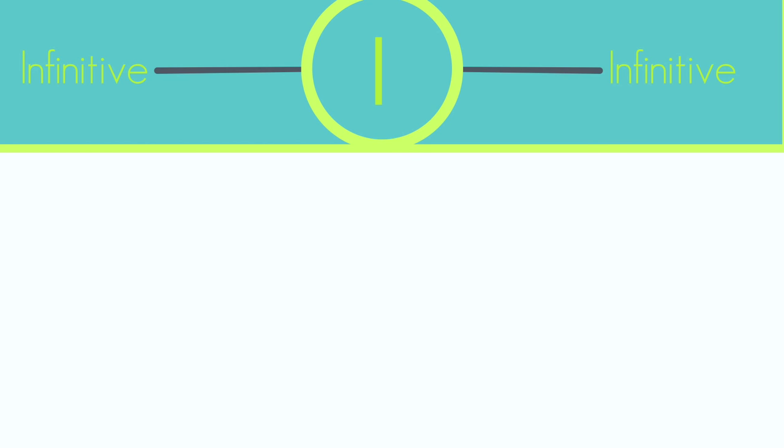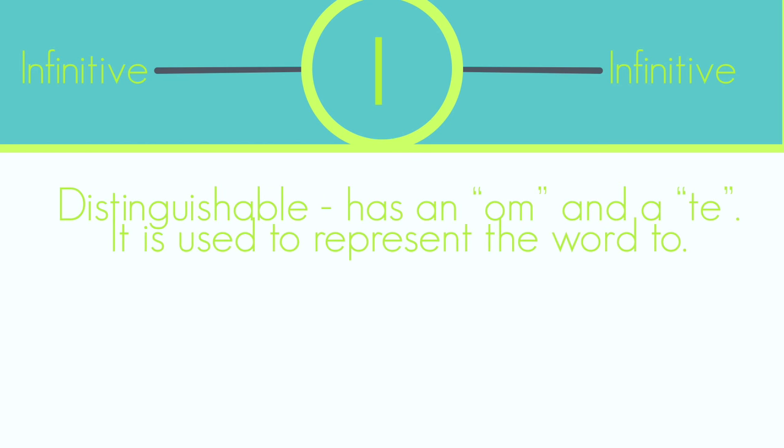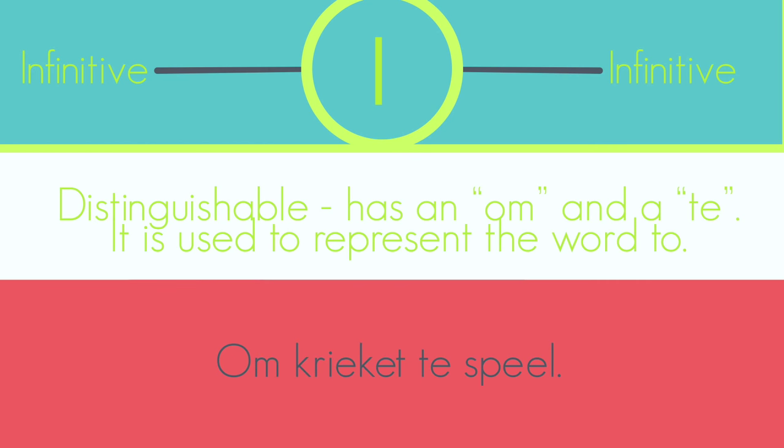The final part of STOMPY is the INFINITIVE. This is a very distinguishable part because an INFINITIVE is where you have an OM and a TE in the sentence. An INFINITIVE looks a lot like a sentence. Here is an example. OM KRIEKET TE SPEEL. So it tells us that he is going TO PLAY CRICKET.